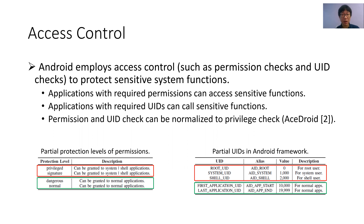Since permissions and UIDs have equivalent semantics in terms of privileged intent, permission checks and UID checks can be normalized to checks on privilege levels, as introduced in a prior study. Following this, normalized permissions and UID checks map to privilege levels including system, shell, and normal.